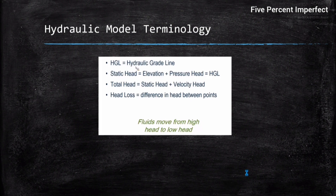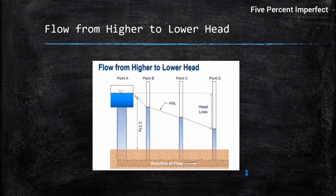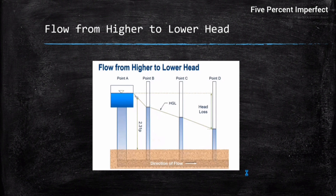Head loss is the difference in head between two points. Fluids generally move from a higher head to a lower head. This is illustrated by a diagram showing flow through a soil medium where piezometers show a gradual decrease in head as flow moves forward, confirming that flow moves from higher head to lower head.